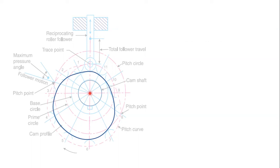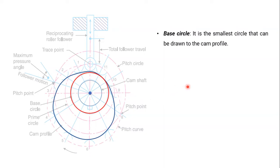Let's have a look at the terminologies. The first one is base circle. Base circle is the smallest circle that can be drawn to the cam profile. We will use this base circle in developing the cam profile, as you will see in examples. Its center should be the same as the center of rotation.